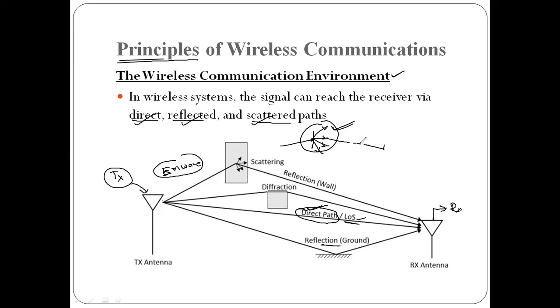The receiver receives signals arriving via reflected and scattered paths. So the receiver collects signals from all these multiple propagation paths — direct, reflected, and scattered.